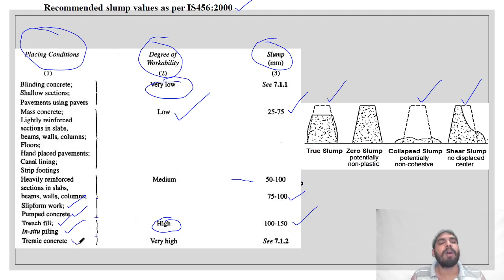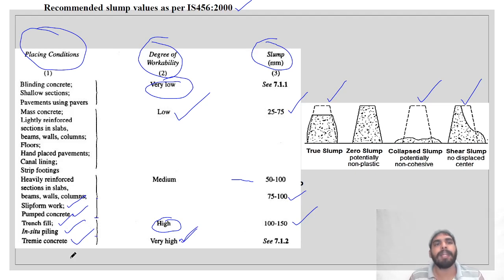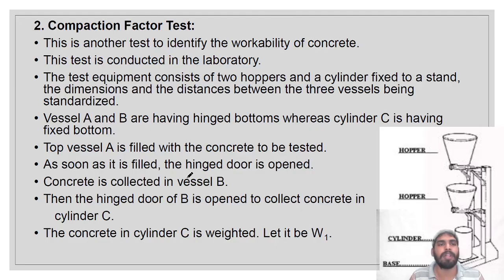For tremie concrete used in underwater concrete placement, very high slump is recommended. These are the recommended slump values as per IS 456-2000.